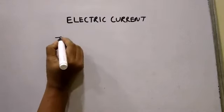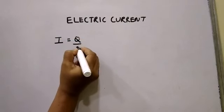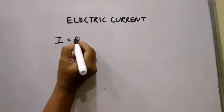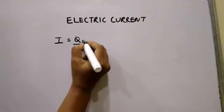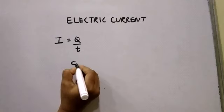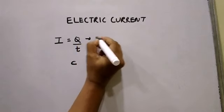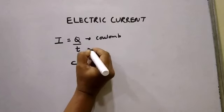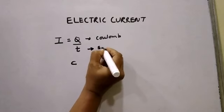Since I know that I is equal to Q upon T, we have to write down the unit of electric current. The unit of charge is coulomb, denoted by C — C-O-U-L-O-M-B. The unit of time is seconds.